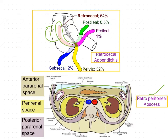Another condition is retroperitoneal abscess. Behind the peritoneum are the retroperitoneal organs, and there are many different retroperitoneal spaces behind this peritoneum. Abscess accumulated in these retroperitoneal spaces leads to retroperitoneal abscess, which is a very uncommon type. It may result from inflammation of organs present in the retroperitoneum. Sickle cell disease is another cause of a positive renal angle test.